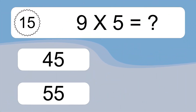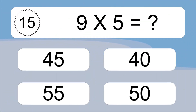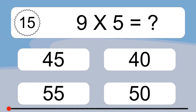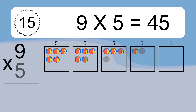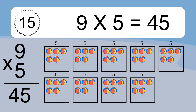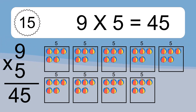Nine times five equals what? Nine times five equals 45. We have nine boxes and each box has five colorful balls inside. If you count all the balls in all the boxes together, you will have nine times five balls. This equals 45 balls.